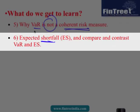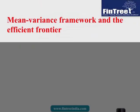And then towards the end we would learn what is expected shortfall and then compare that with VaR. This is roughly the nature of the reading. So let's get started. Mean Variance Framework and Efficient Frontier.